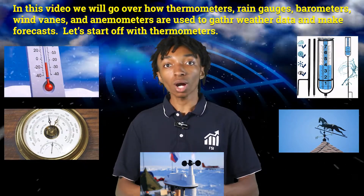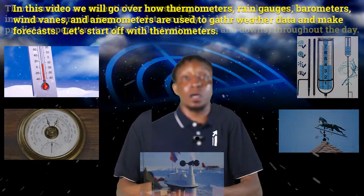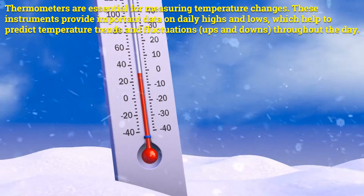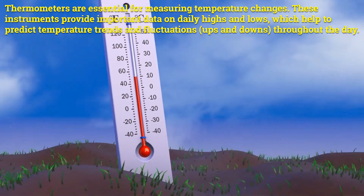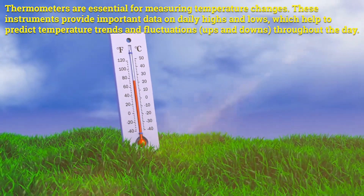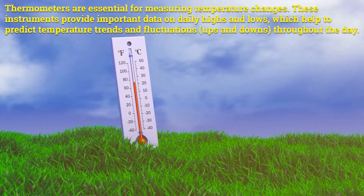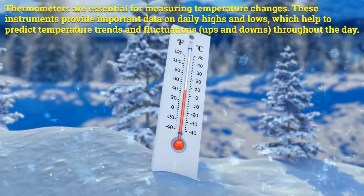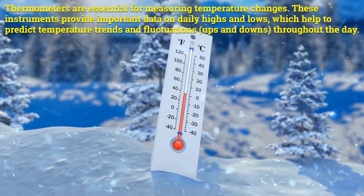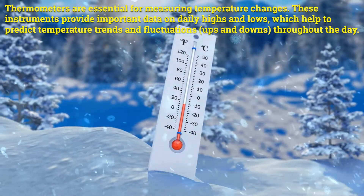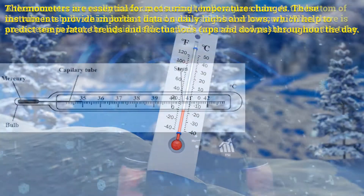Let's start off with thermometers. Thermometers are essential for measuring temperature changes. These instruments provide important data on daily highs and lows, which help to predict temperature trends and fluctuations — or ups and downs — throughout the day.